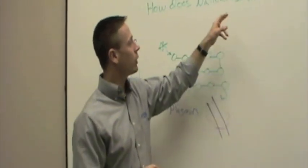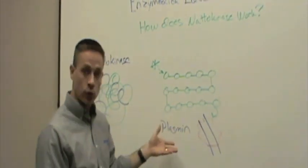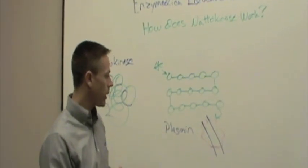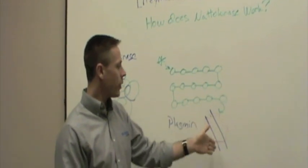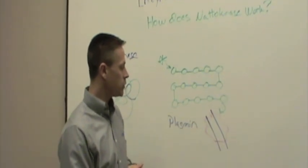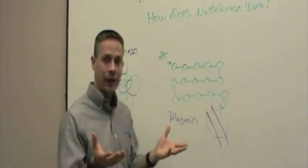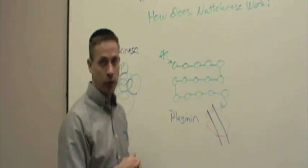So how does natokinase work? It's a hydrolase enzyme. It's using a water molecule, like we use a pair of scissors, and basically breaking down amino acids off these protein bonds, dissolving, hydrolyzing really, that blood clot.